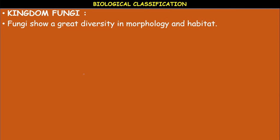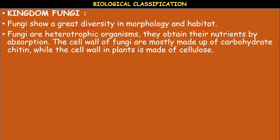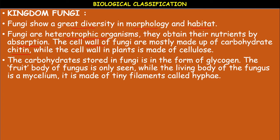Next, Kingdom Fungi. Fungi are eukaryotic, achlorophyllous, heterotrophic, spore-bearing, non-vascular organisms. The cell wall of fungi is made up of a special material called chitin, also called fungal cellulose. Fungi show great diversity in morphology and habitat. They obtain their nutrients by absorption. The carbohydrate stored in fungi is in the form of glycogen.